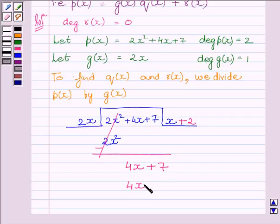Again, subtracting the like terms and rewriting the rest of the terms of the division, we get 7 as the remainder.